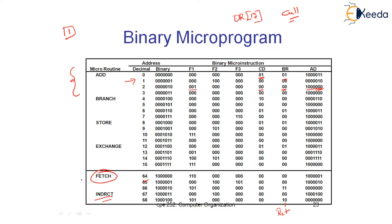We have just witnessed a symbolic micro program and an equivalent binary micro program, and we are done designing the microprogrammed control unit. In the next session, we will have a simple segregation of all events that happened so far — identifying the different parts of the microprogrammed control unit in order to summarize.